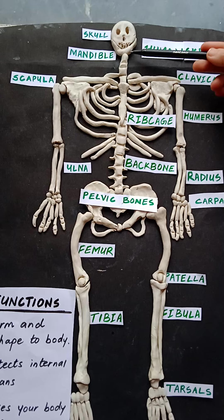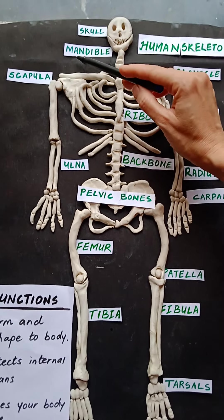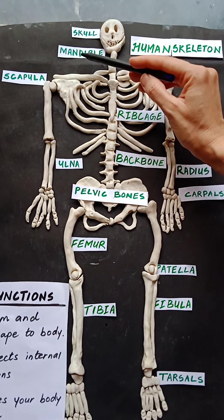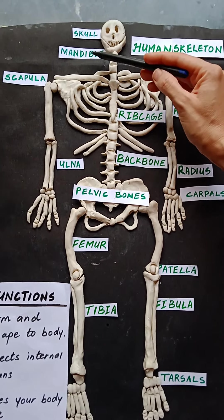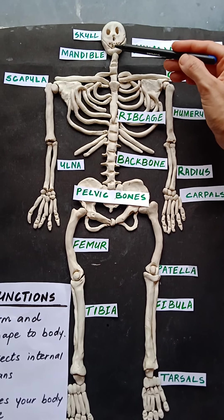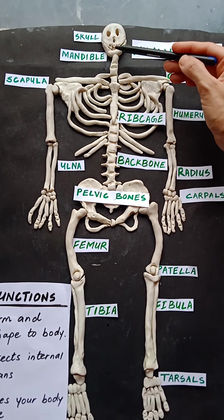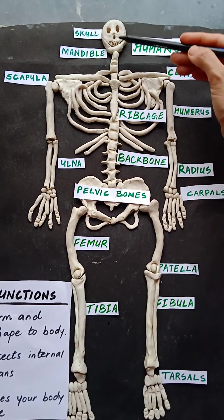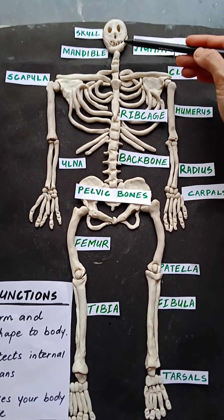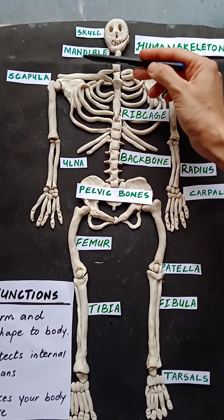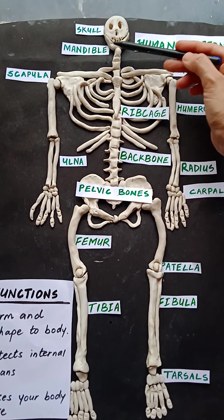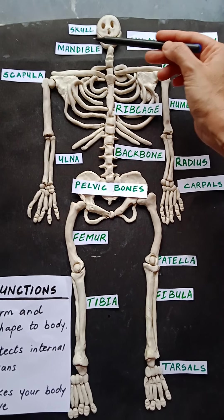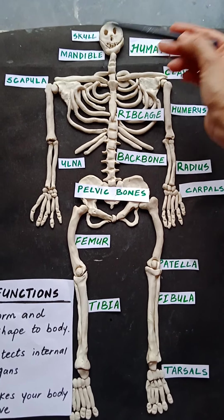This bone is called the mandible. How will you remember the name of this bone? You can see that 'mandi' rhymes with 'candy' — you chew candy here only, with the help of this bone. So 'mandi candy' — this is how you will remember the name of this bone. Simple and easy, isn't it?